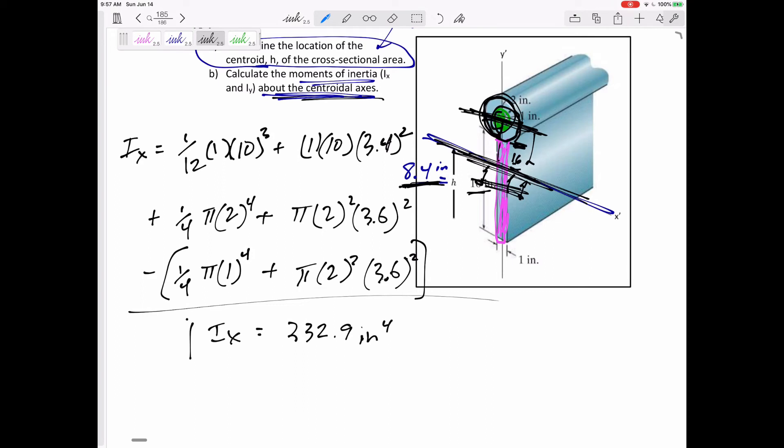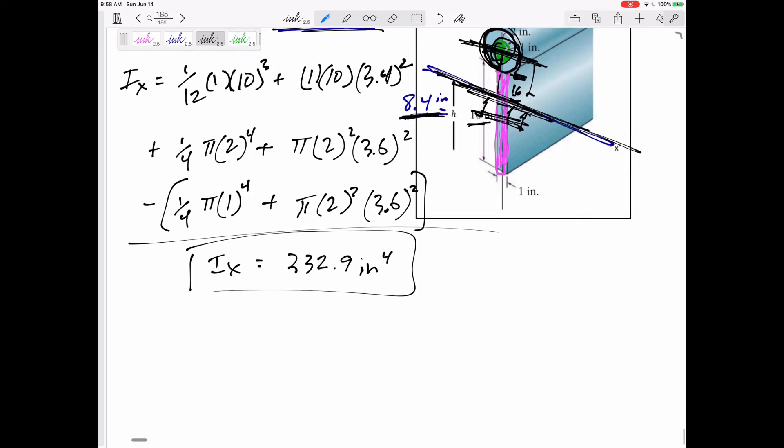That is the I about this centroidal axis, the centroid of the composite body, the cross section. All right, IY.